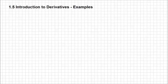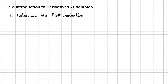We've been introduced to derivatives and now know the first principles definition of the derivative. Let's see how we can apply this principle on some examples. We need to determine the first derivative using the first principles definition for the following function: f of x equals 3x squared.